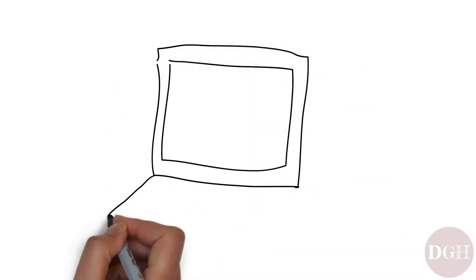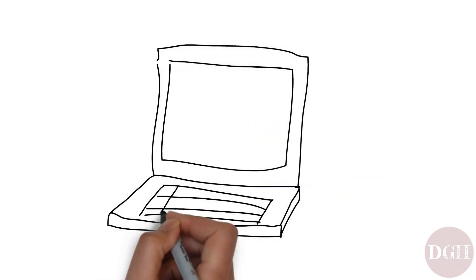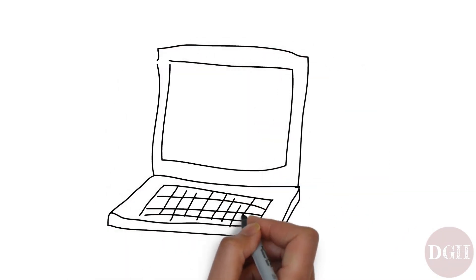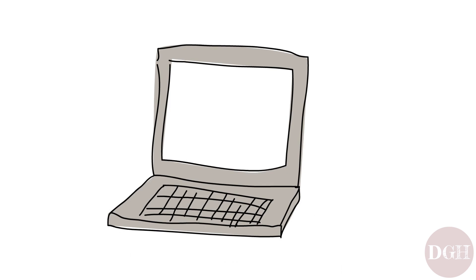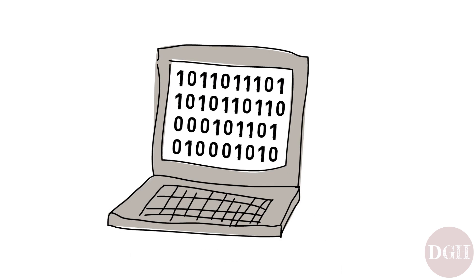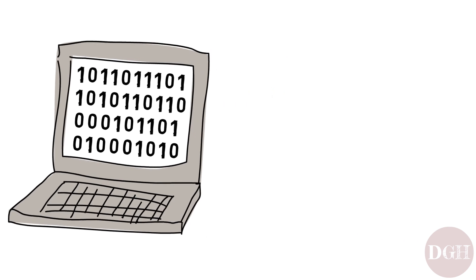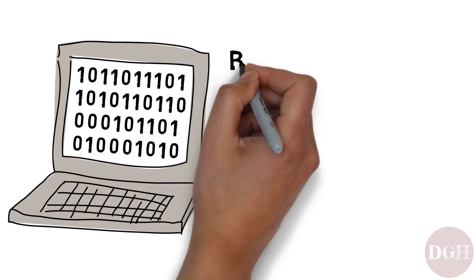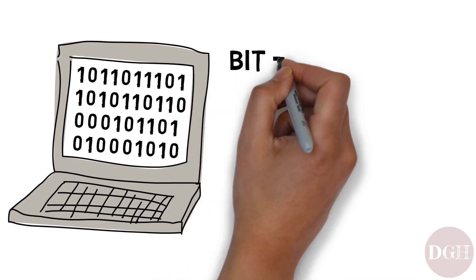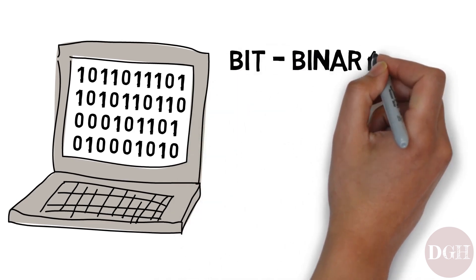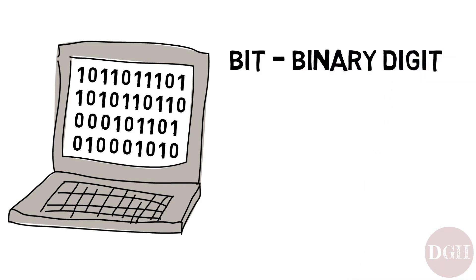Let's continue learning about how computers store data. As we learned earlier, computers use the binary system, which has only two numbers: 1 and 0. The word used to describe these binary digits, which can be either 1 or 0, is a bit — B-I-T. It's short for binary digit, and it's the smallest unit of data in a computer.